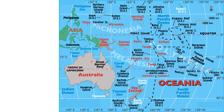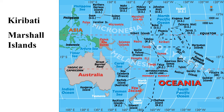In Oceania, there are some countries with no permanent rivers. The first country is Kiribati, an island country in Oceania with no permanent rivers. The second one is the Marshall Islands, separate islands in Oceania, also with no permanent rivers. Nauru is an island country in Oceania with no permanent rivers; another fact about Nauru is that it is the only country in the world with no official capital city.